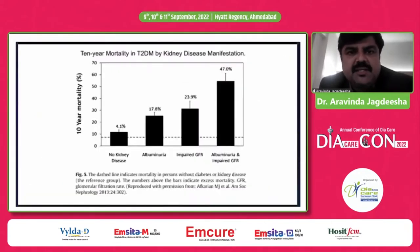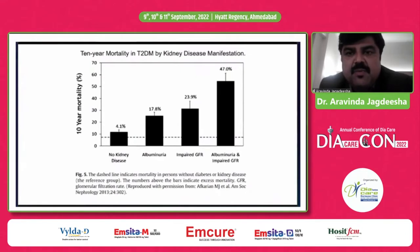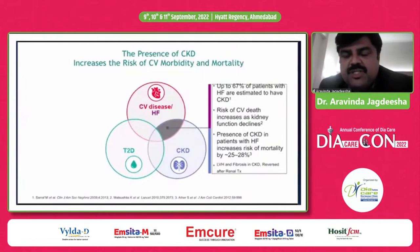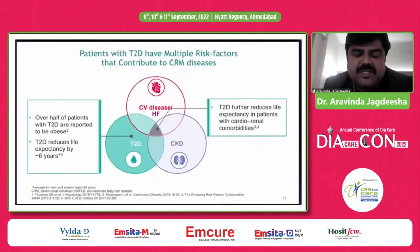Looking at 10-year mortality in type 2 diabetes by kidney disease manifestation: with no kidney disease it is 4.1 percent; with albuminuria it is 17.8 percent; with impaired GFR it is 23.9 percent; and with both albuminuria and impaired GFR, the 10-year mortality rises to 47 percent. The presence of CKD increases CV morbidity and mortality risk; up to 67 percent of patients with heart failure are estimated to have CKD, and CKD in heart failure increases mortality risk by 25 to 28 percent.